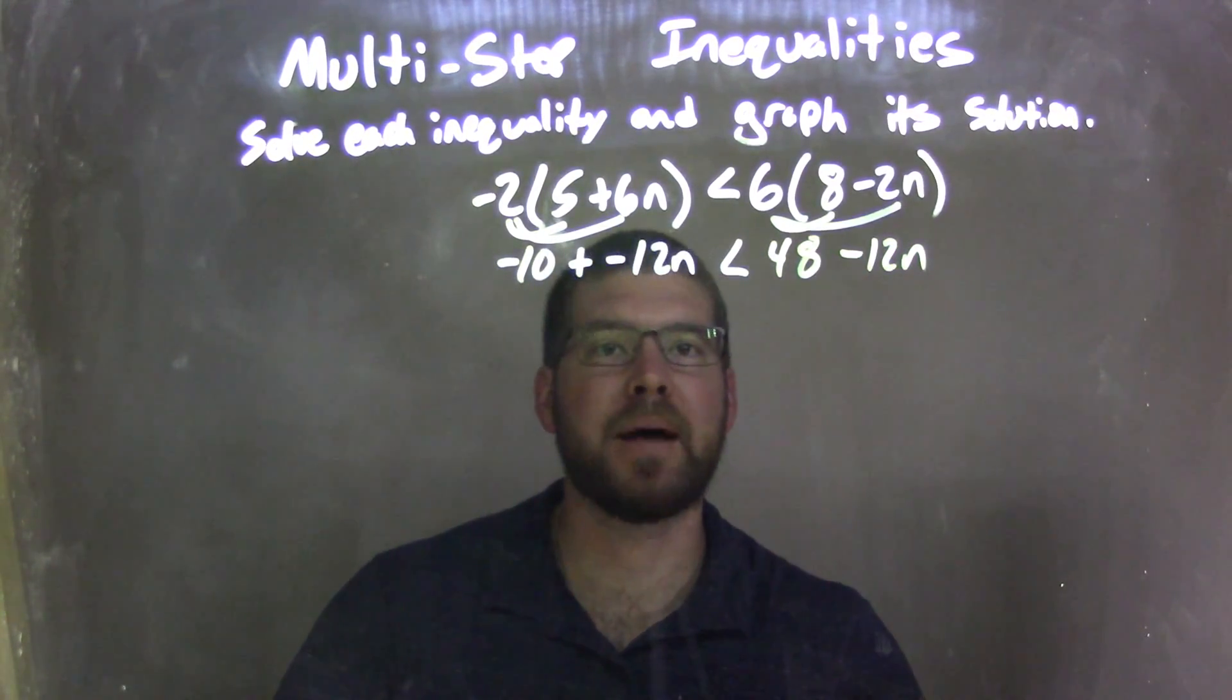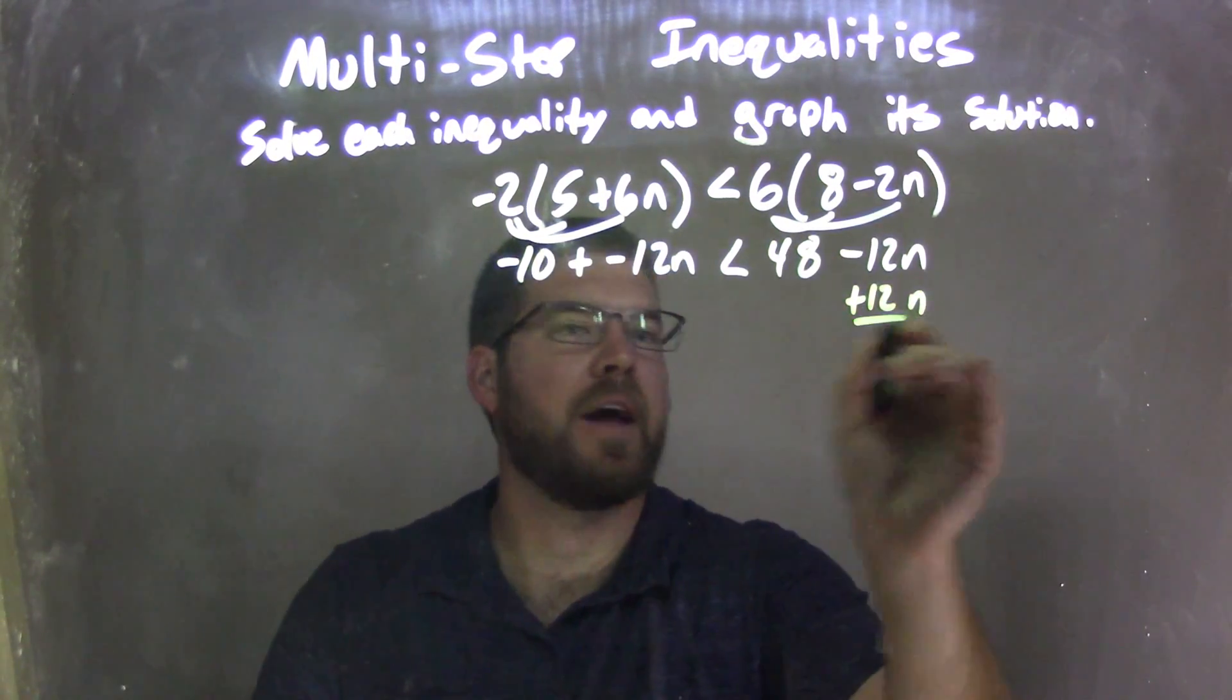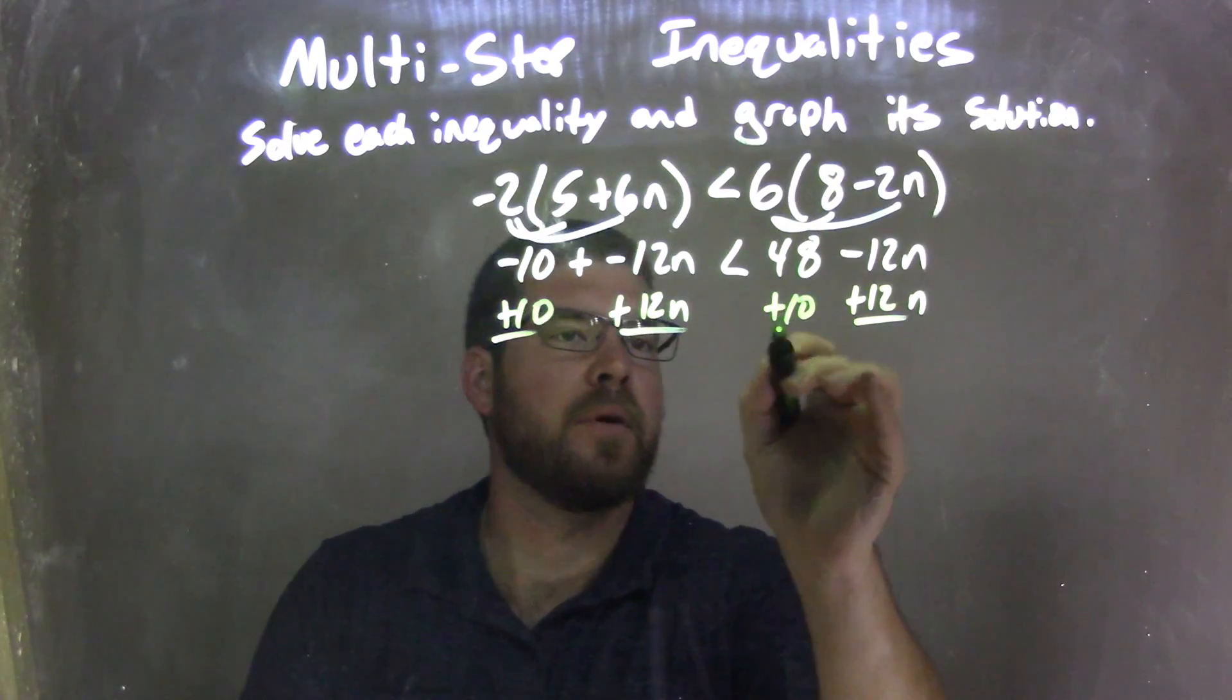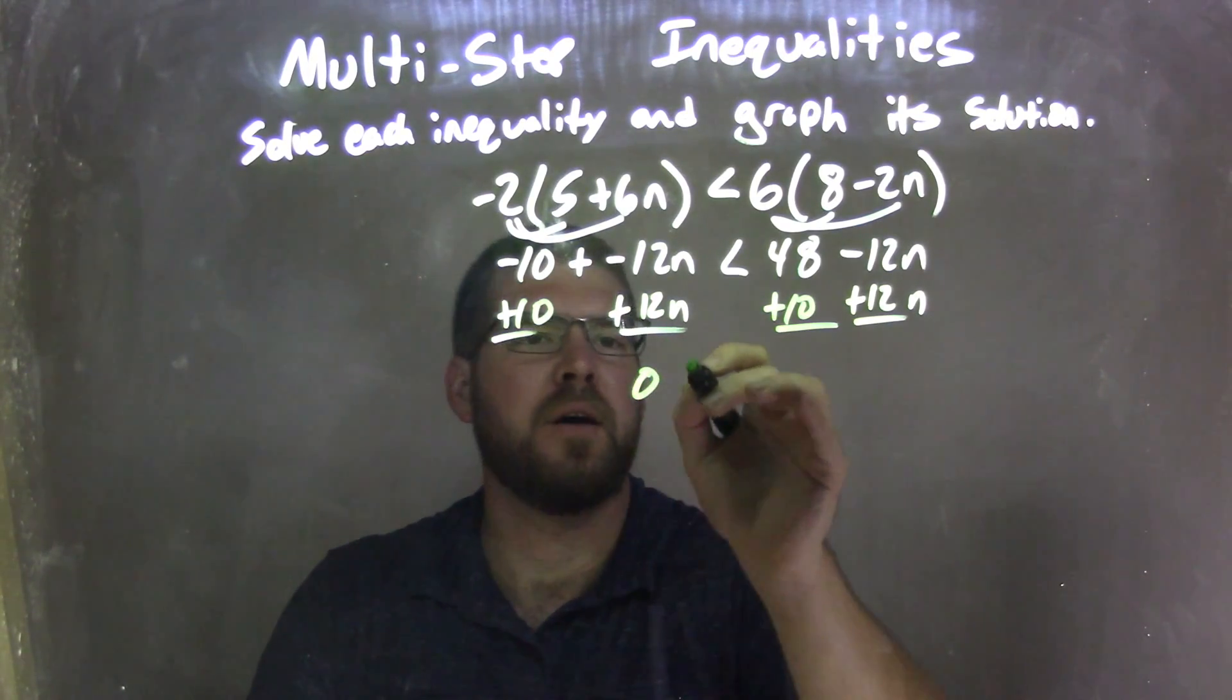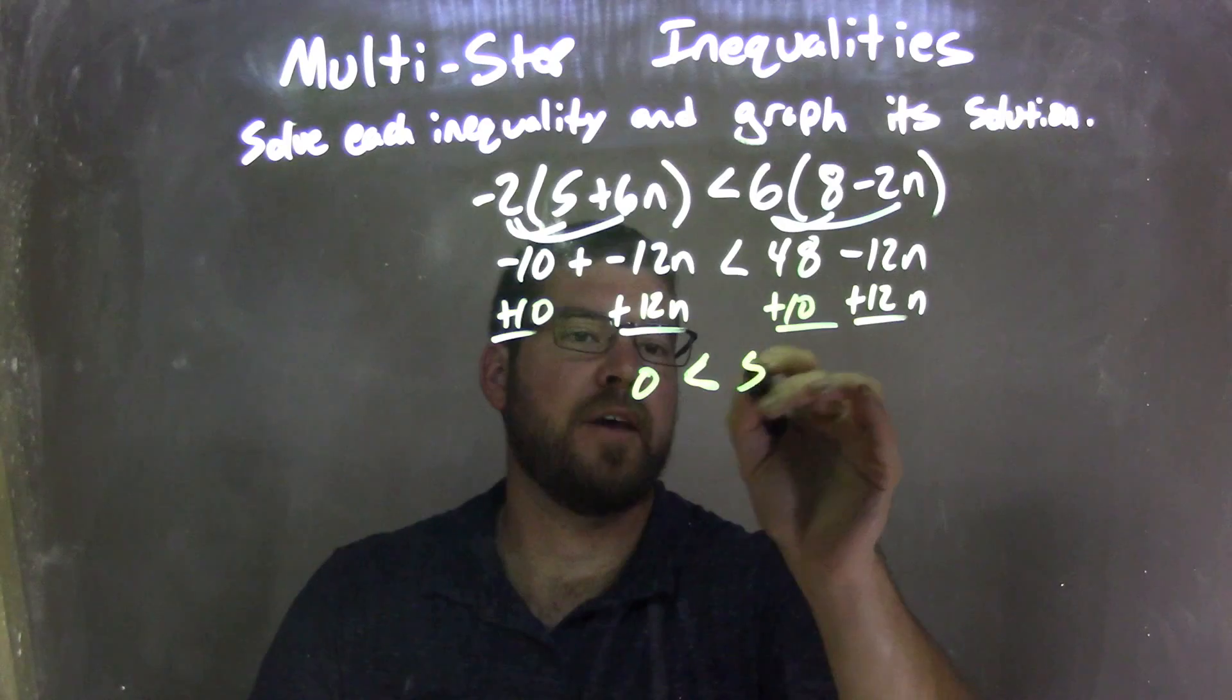Now I'm going to combine my like terms. I'm going to add 12n to both sides to bring our n's to the left, and our numbers to the right. I'm going to add 10 to both sides. What that leaves me is negative 12n plus 12n is just 0, and that is less than 48 plus 10, which is 58.